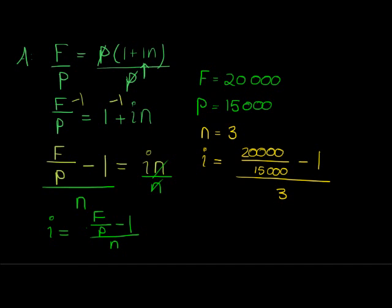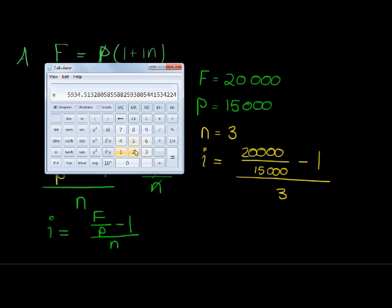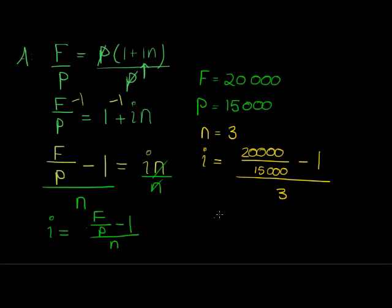20,000 divided by 15,000 minus 1, divided everything by 3. Let's see what that answer is. 20,000 divided by 15,000 gives me an answer of 1.3333. That is for the numerator. So subtract 1, and now divide by 3. That gives me 0.1111.